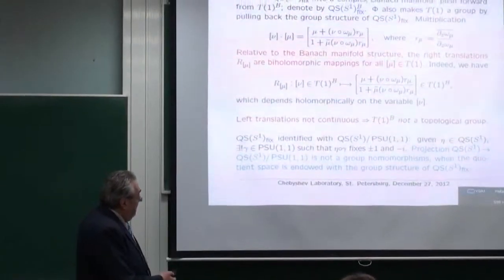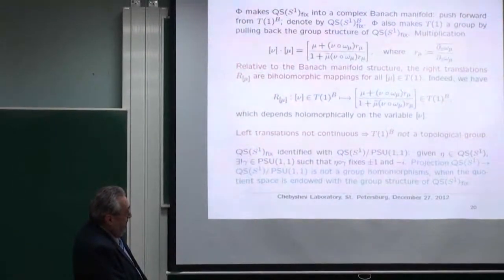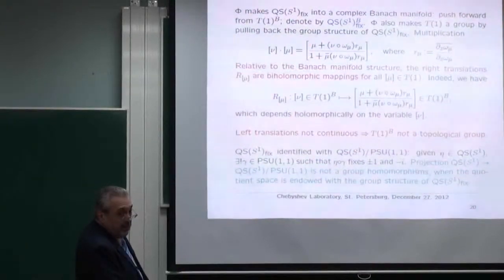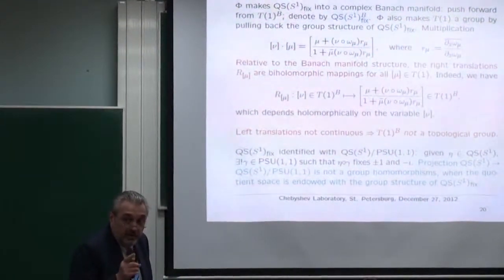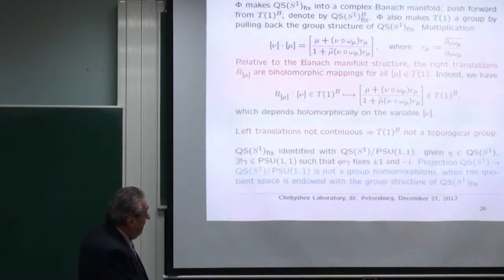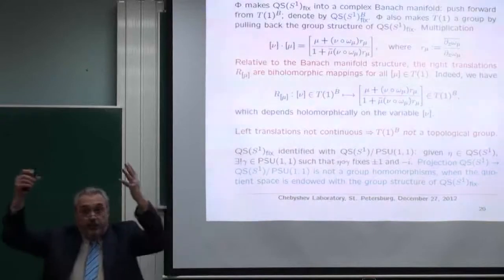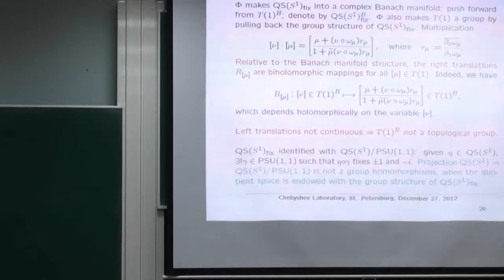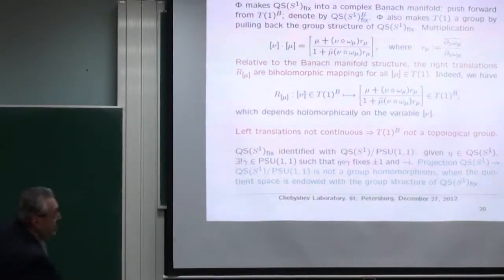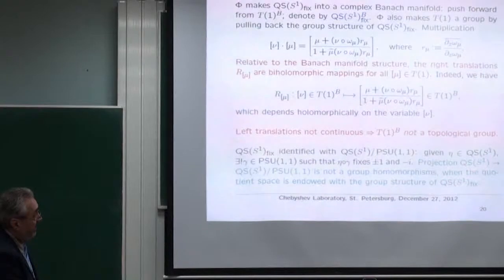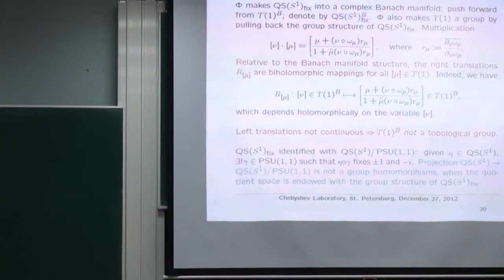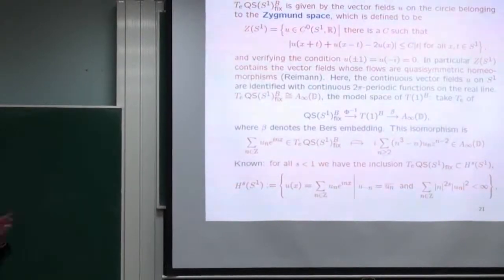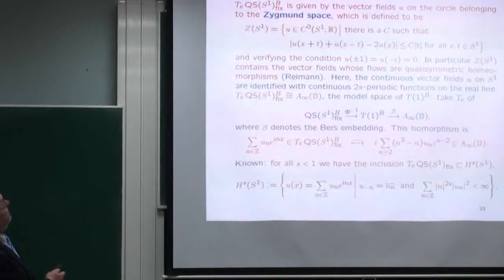A warning: QS_fix is not simply QS(S¹) / PSU(1,1), because PSU(1,1) is not normal in QS. Careful — the group structure on QS_fix(1) comes from the blue formula; it's not what you think. The projection of QS(S¹) onto QS(S¹)/PSU(1,1) is not a group homomorphism. This is not even a group if you think of it as a quotient.